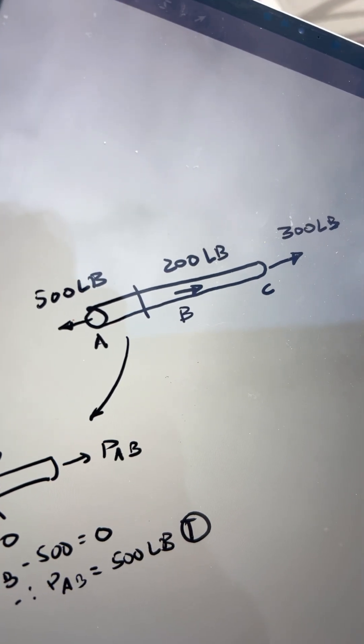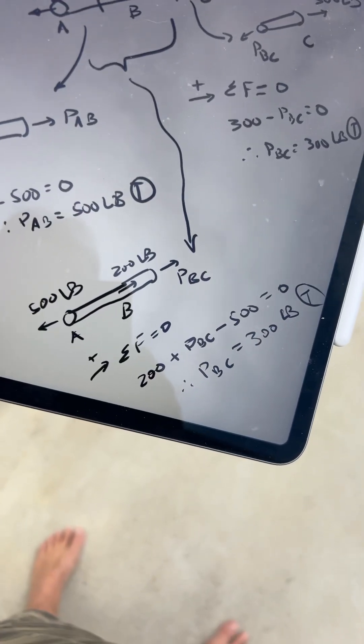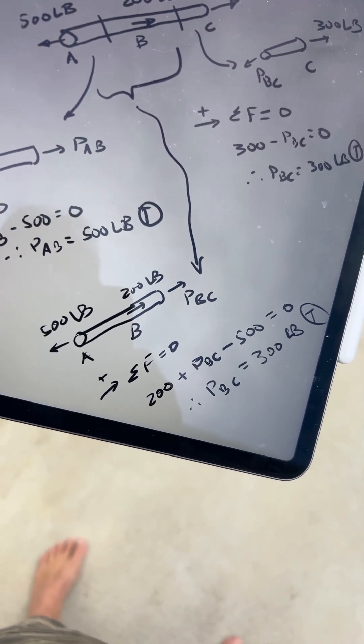We can do the same by cutting between B and C, and we see that BC has 300 pounds. Before using our BC cut, we could have confirmed the same thing working from A to the cut. So simple, but critical.